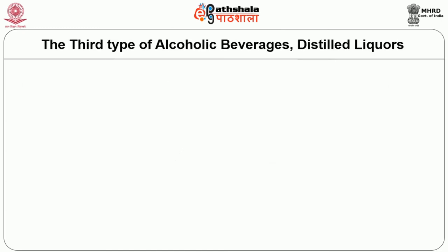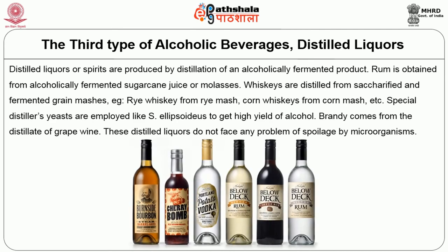Next we shall discuss distilled liquors. Distilled liquors or spirits are produced by distillation of an alcoholically fermented product. Rum is obtained from fermented sugarcane juice or molasses. Whiskies are distilled from saccharified and fermented grain mashes — for example, rye whiskey from rye mash, corn whiskey from corn mash. Special distiller's yeast such as Saccharomyces ellipsoideus are employed to get high yield of alcohol. Brandy comes from the distillate of grape wine. These distilled liquors do not face any problem of spoilage by microorganisms.